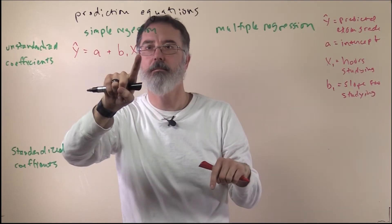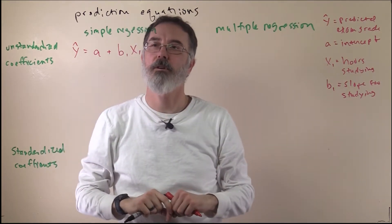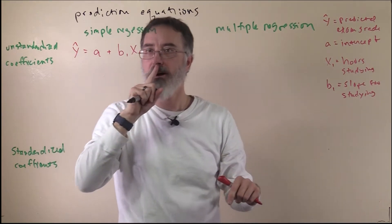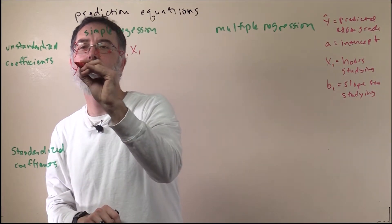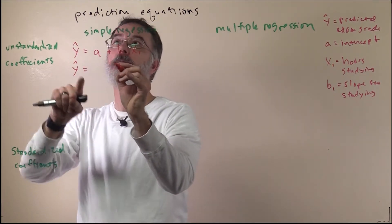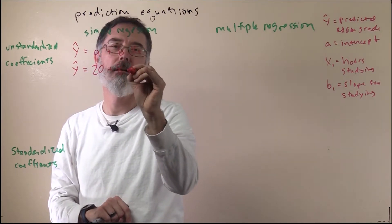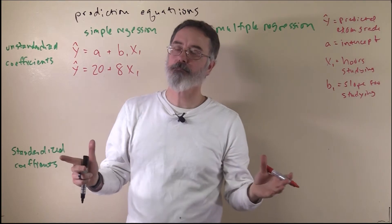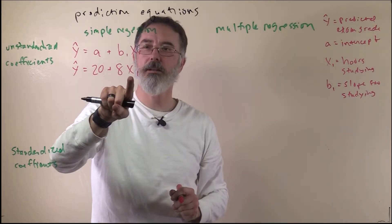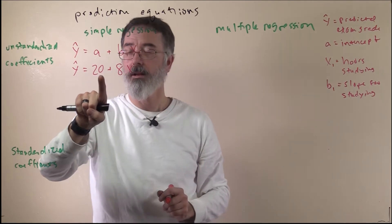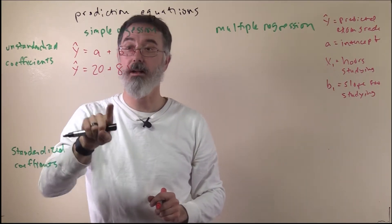If b1 is positive, the more hours you study, the higher the predicted exam grade. When we talked about simple regression previously, we said that we had some data and we got a prediction equation. This means that somebody who does not study at all — if you put zero in for x1 — you predict their exam grade as a 20, which they will not pass my class with.